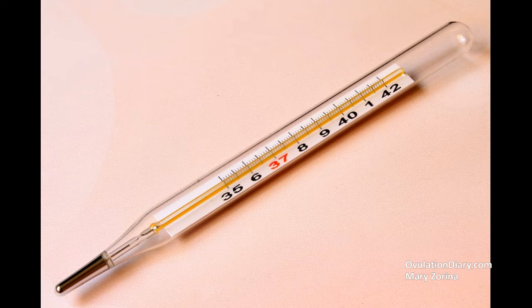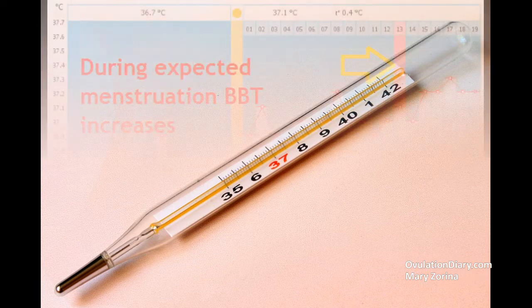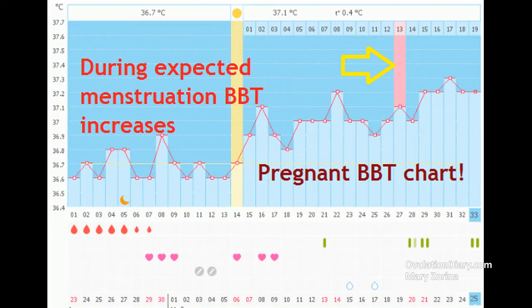Also check whether measurements were made in previous cycles, as such an increase can be an individual feature of a woman. In the absence of pregnancy, even if BBT rises before menstruation, within two to four days of the new cycle the basal body temperature will necessarily drop to the usual parameters of the first phase. Even if the temperature has not dropped with the onset of menstruation and tests still show a negative result, you need to take a blood HCG test.